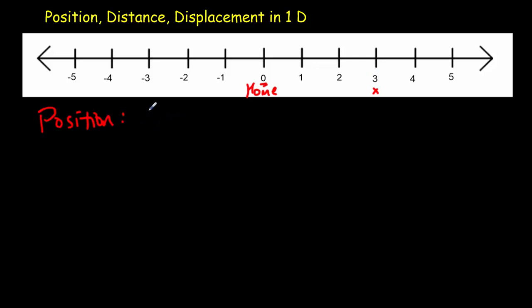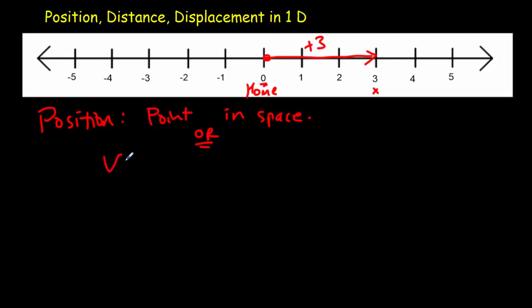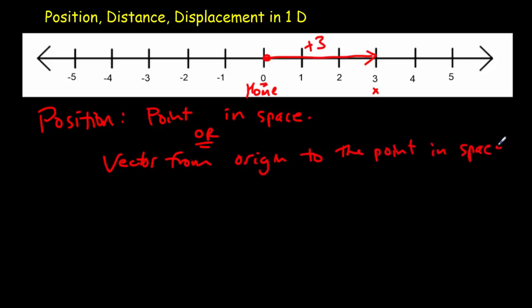Our position is really a point in space. But it can also be described a different way — we could draw a vector from the origin to that point, and that would be the vector plus three. So our position is a vector from the origin to the point in space. In either case, we have the same information: the three tells us how far, and the plus or minus tells us to the left or to the right.